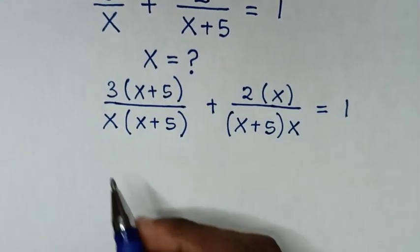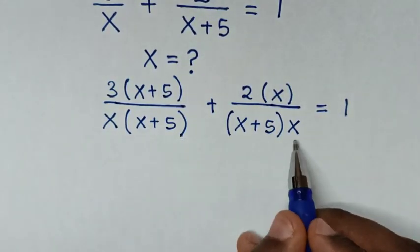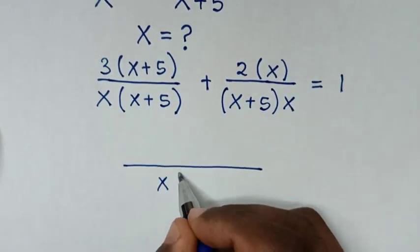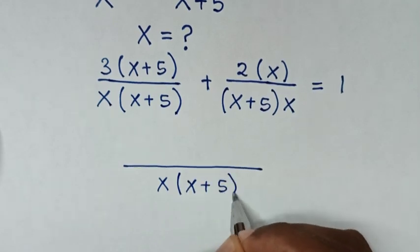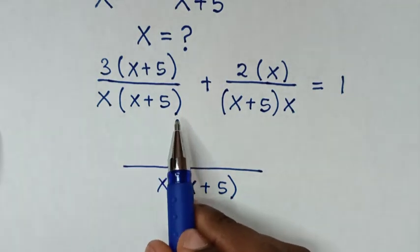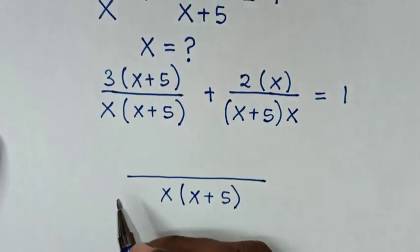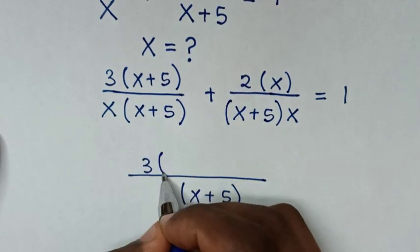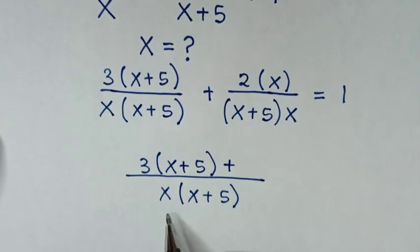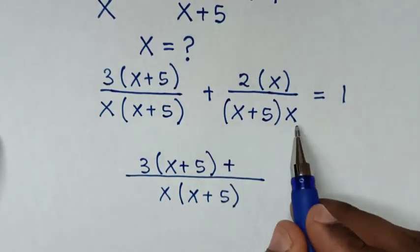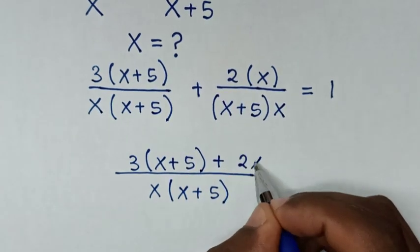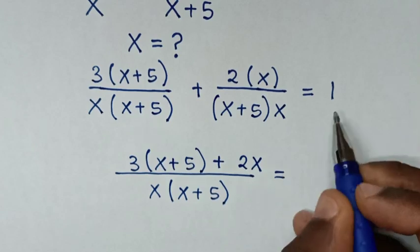Then in the next step, the common denominator of this and this is the same. So it will be over x bracket x plus 5 bracket. When you divide this by this, it is 1. So 1 times this is the same, which is 3 bracket x plus 5 bracket, then plus this — divide by this is 1. So 1 times this will be 2x, then is equal to 1.